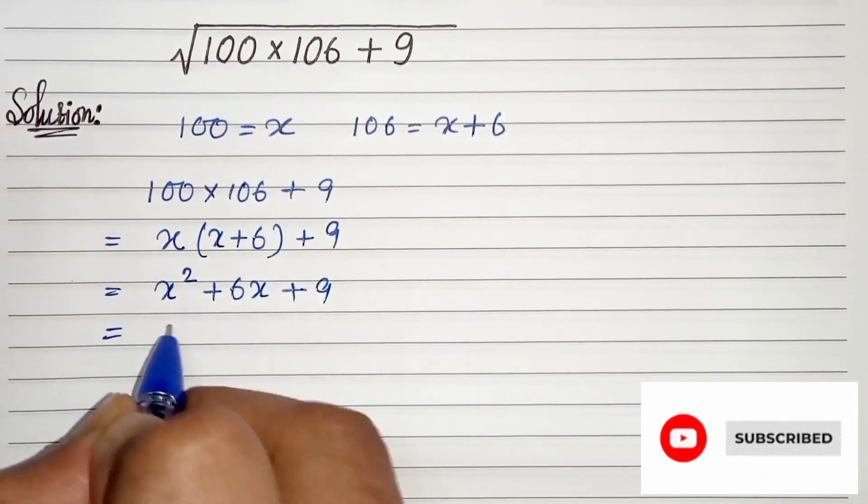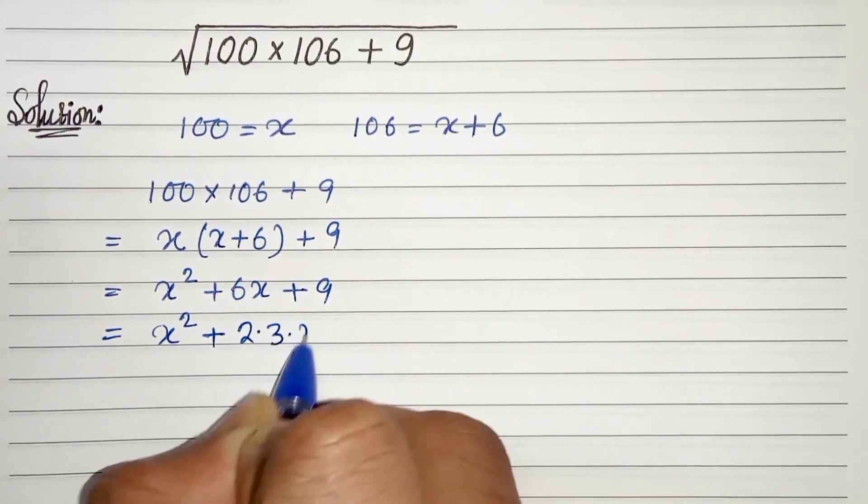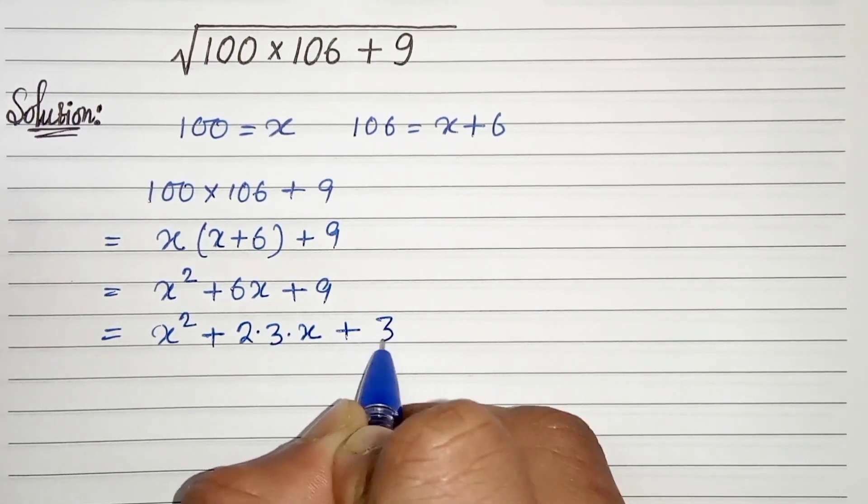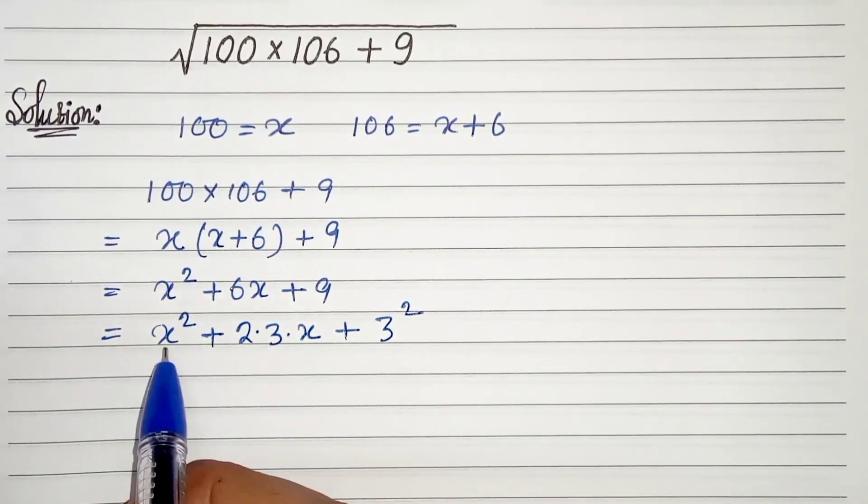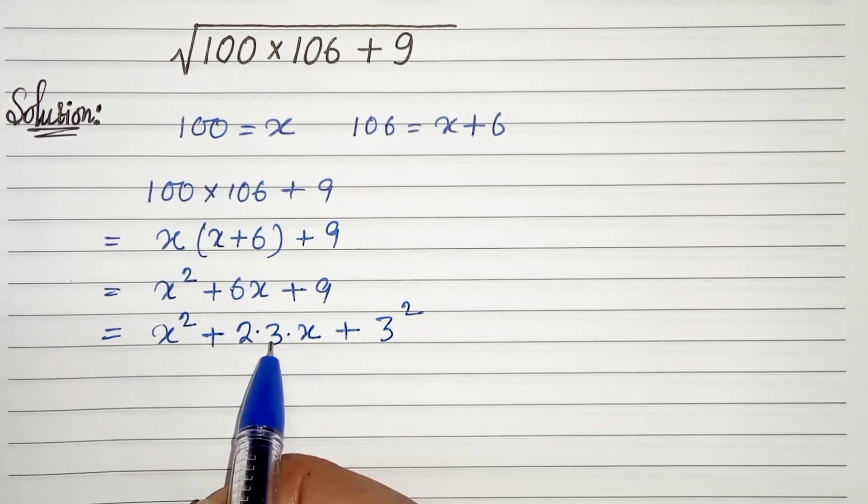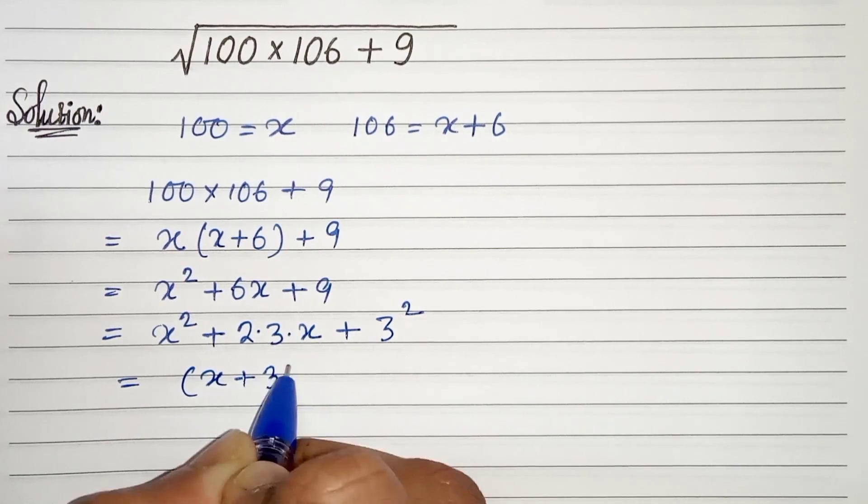In the next step we can write x squared, 6 as 2 times 3 times x, plus 9 as 3 squared. And this is nothing but (a plus b) whole square, which is a squared plus 2ab plus b squared. So we can write (x plus 3) whole square.